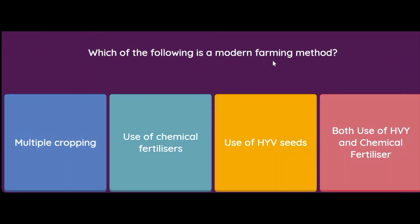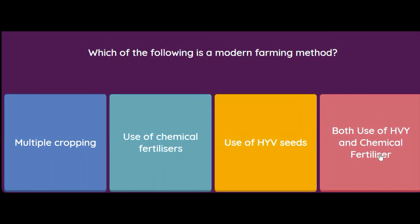Which of the following is a modern farming method? Multiple cropping, use of chemical fertilizers, use of high yield seeds, or both chemical fertilizers and high yield seeds? The answer is both chemical fertilizers and high yield seeds, as both are used in modern farming.